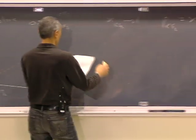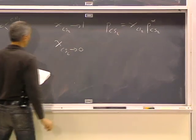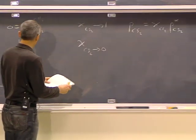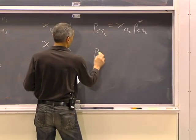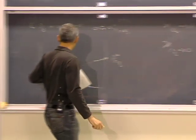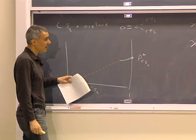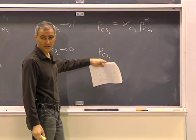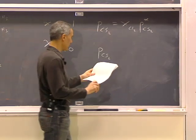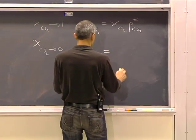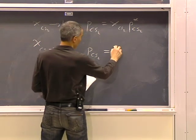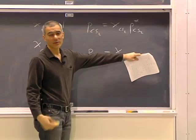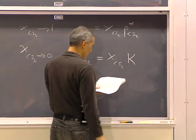There's going to be some deviation from Raoult's law. In the other limit, where the mole fraction of CS2 goes to zero — so now CS2 is the solute and acetone is the solvent — Raoult's law is no longer valid. Instead, you have to look at Henry's Law. Henry's Law tells you that for the solute, the vapor pressure is related to the mole fraction in the solution times the Henry's Law constant K.